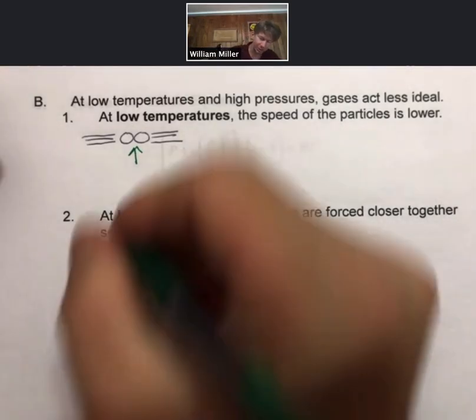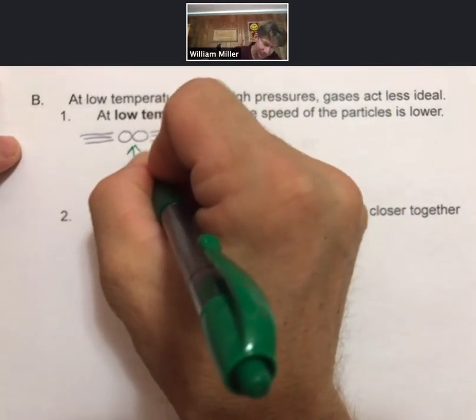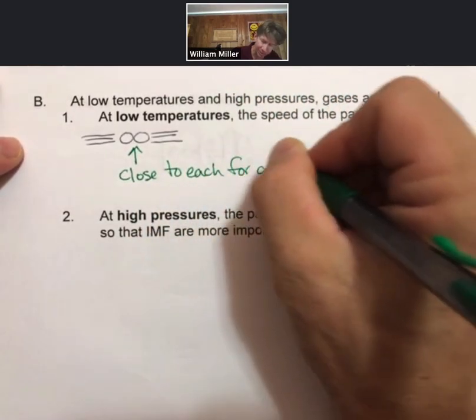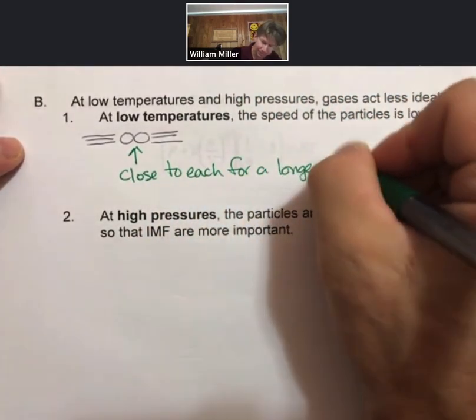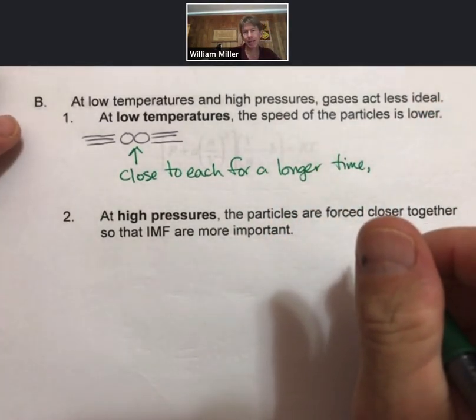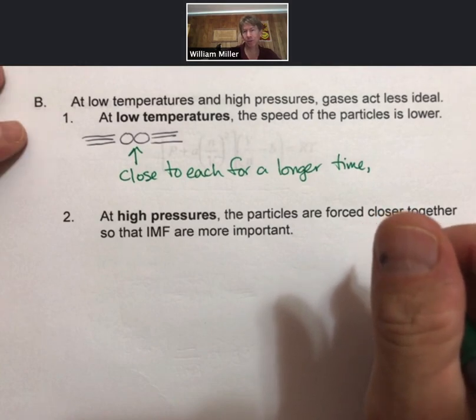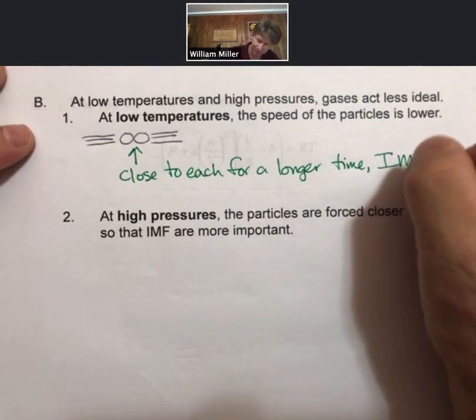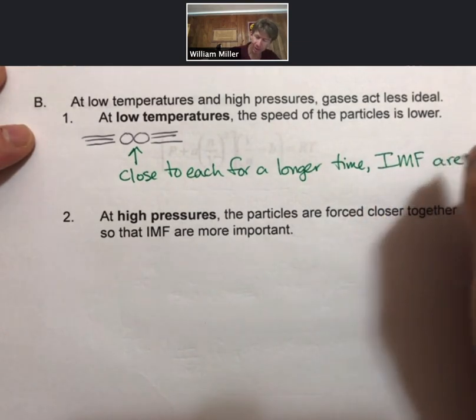When they're moving more slowly, they are close to each other for a longer time, and attractions between particles that we call intermolecular forces or IMF are more important.